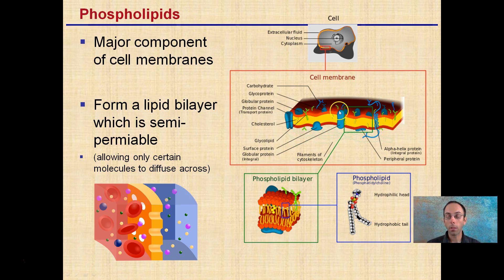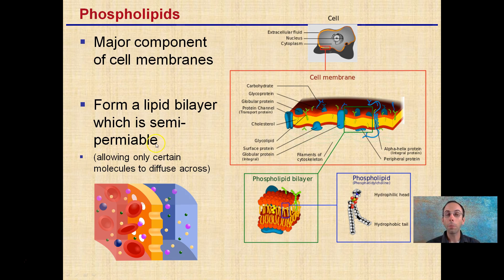The cell has a lot of proteins allowing for signaling and allowing for things to come in and out. But the main barrier here is this phospholipid bilayer component of the cell. It doesn't prevent anything from getting through entirely, but it is semipermeable — only certain molecules can diffuse across. Others need protein carriers and active transport to move them across.